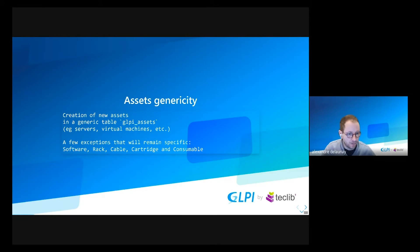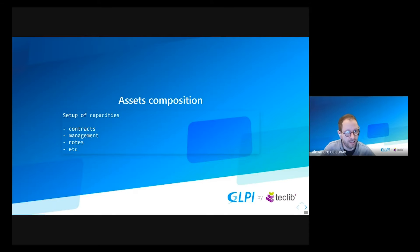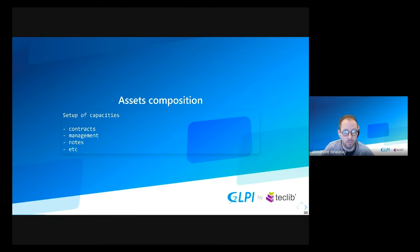Some of the current types will still be not removable, like software, racks, cable, etc. The reason is their behavior or their presentation differs greatly from other assets. You will still be able to disable these if you want, but deletion will be impossible. So genericity covers the creation of new asset types. In addition, in the same setup page, you will be able to define which capacity an asset type uses, like contract management, etc. — a composition of an asset type with some checkboxes to select capacities. You can think of this as permitting you to remove or add tabs to the object, or whether an object can be inventoried by an agent.